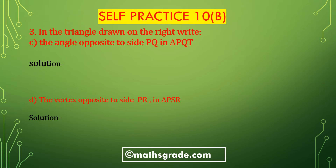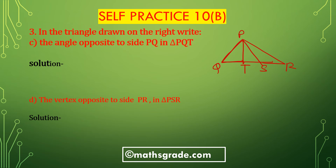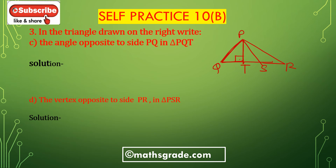Third bit C: The angle opposite to the side PQ in triangle PQT. Draw the triangle — this is triangle PQR with points T and S. In triangle PQT, since PT is the altitude, angle PTQ is 90 degrees. The angle opposite to the side PQ is angle PTQ, which equals 90 degrees. So the angle opposite to side PQ is angle T.